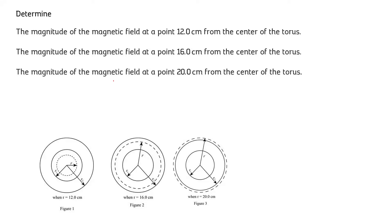In this question, we have to determine the magnitude of magnetic field at different lengths: at 12 cm from the center, at 16 cm from the center, and at 20 cm from the center of the toroid.